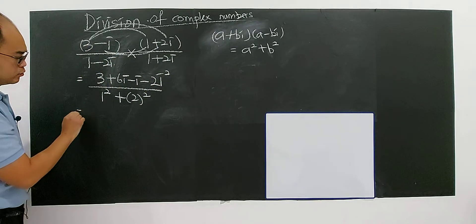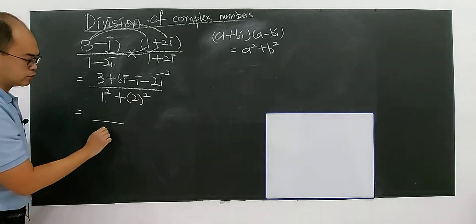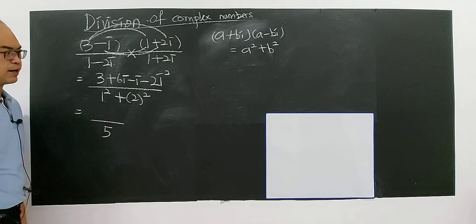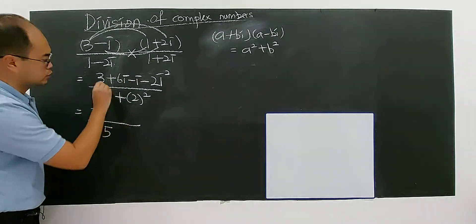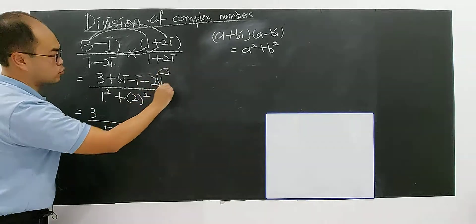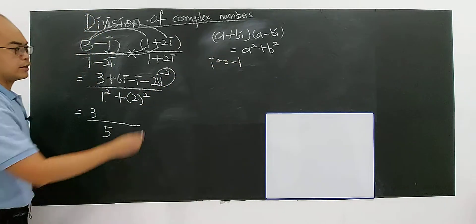So then you have 2 squared plus 1, then you got 5. Let's deal with the numerator. So 3 times i squared—remember i squared will be negative 1.